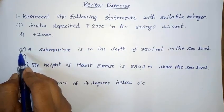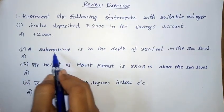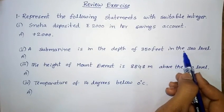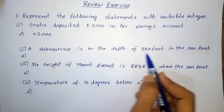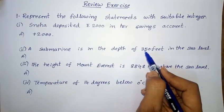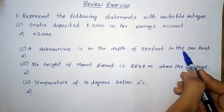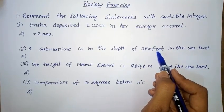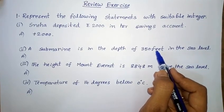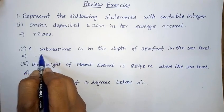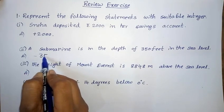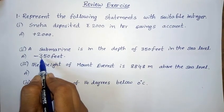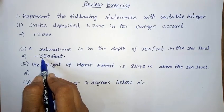1st Roman 2nd one: A submarine is at a depth of 350 feet below the sea level. So the submarine depth is 350 feet below the sea level. Below the sea level means it is negative, so the answer is minus 350 feet.